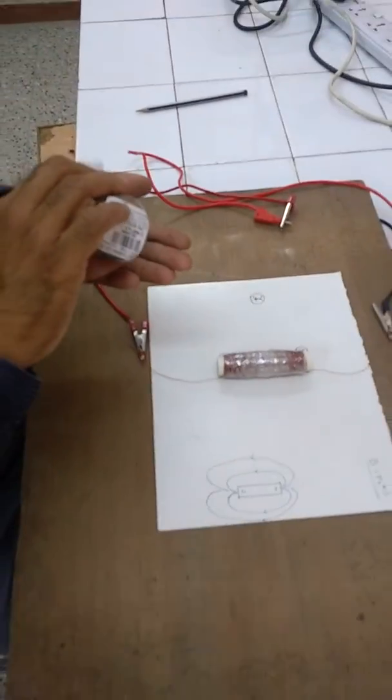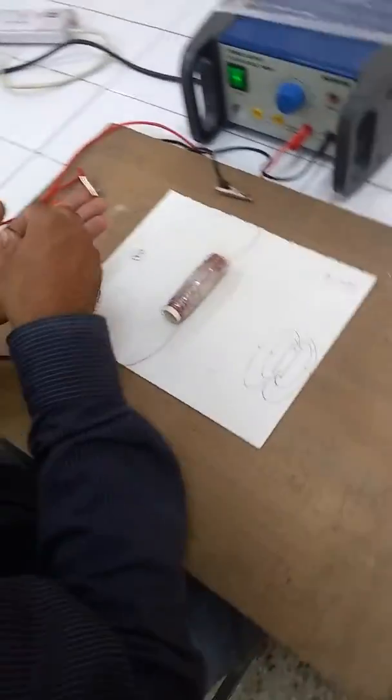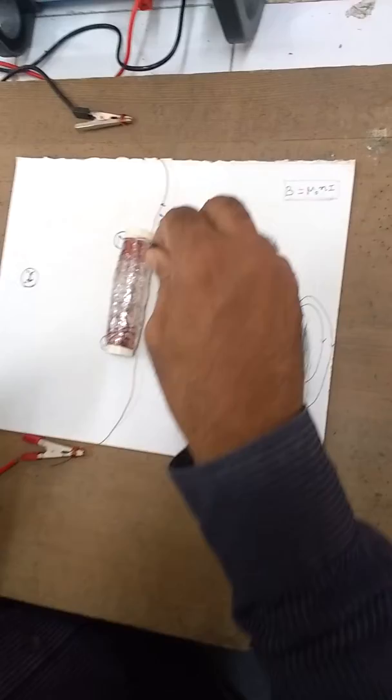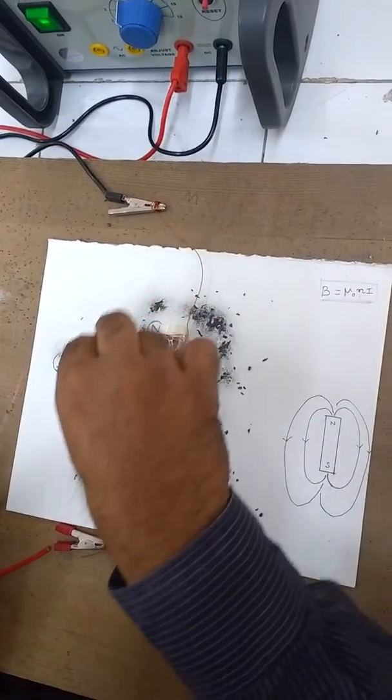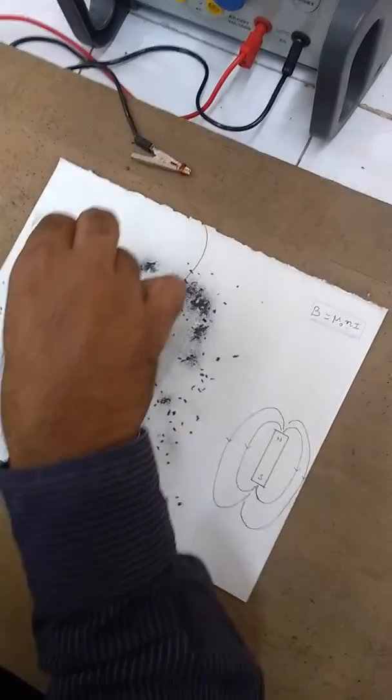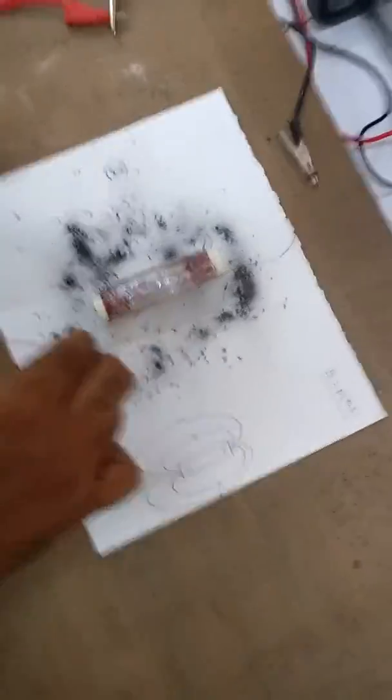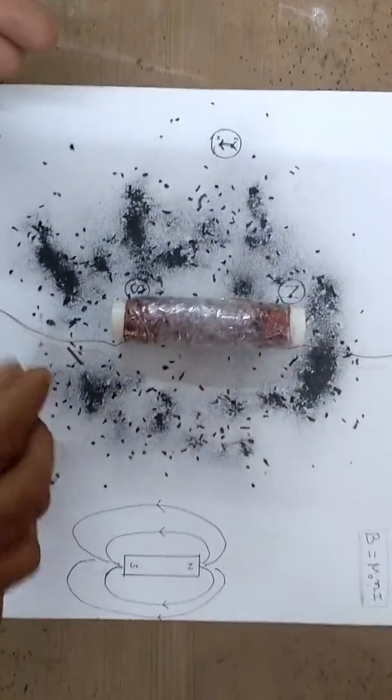And around this, there is magnetic field, definitely. Now I'm going to take the iron filings and I'm going to sprinkle over here. Let me sprinkle the iron filings. Iron filings are being sprinkled here. Let us see what happens. Let me tap this.